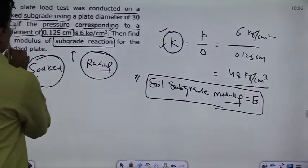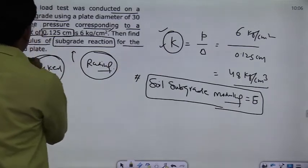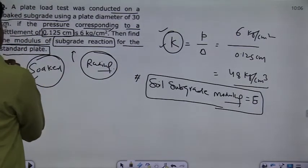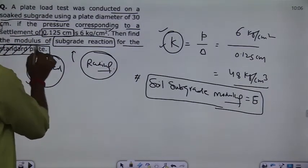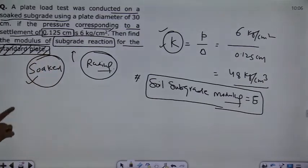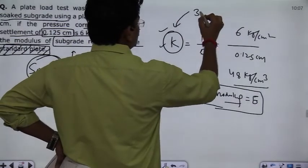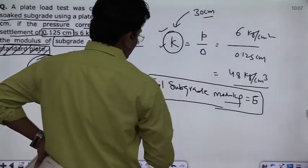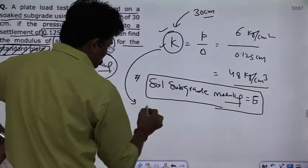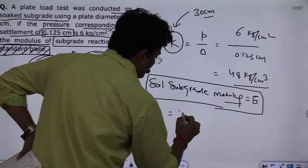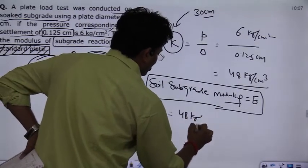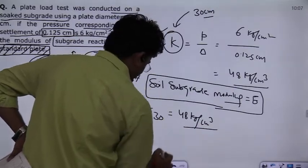Then find the modulus of the subgrade reaction for the standard plate. This standard plate, whether mentioned or not, you will always report the result you used in the plate testing. Its diameter is 30 cm, so it means this result is basically k₃₀. k₃₀ is 48 kg per cm³.